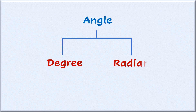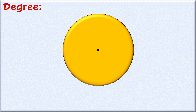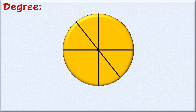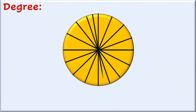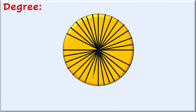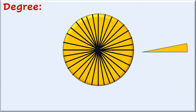In this video we shall discuss two units of angle: degree and radian. Let's first discuss the unit degree. We take a circle and divide the circumference into 360 equal parts. The angle subtended by one part at the center of the circle is called one degree.